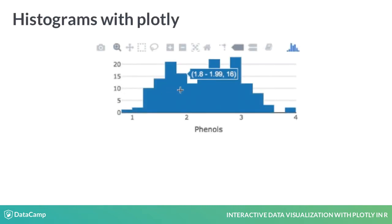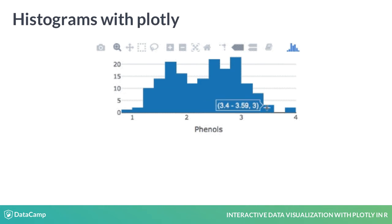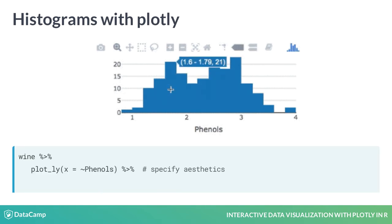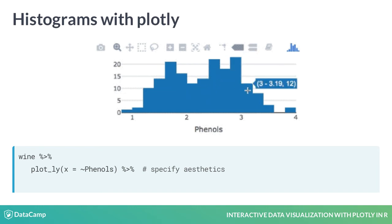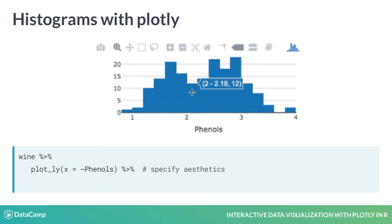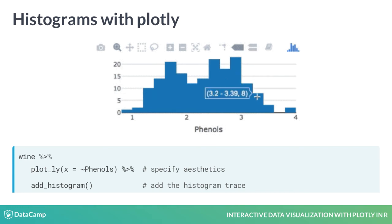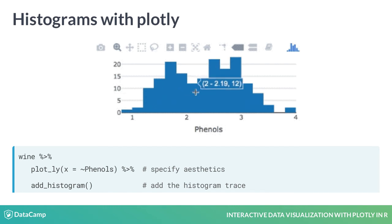To explore the distribution of phenols, a numeric variable, we use a histogram displaying the number of wines with phenols falling into equal-width bins. We again need to specify three parts. First, we pipe the wine dataset into the plot_ly command. Next, we specify x equals tilde phenols, indicating that phenols should be plotted on the x-axis. Finally, we add the histogram trace using the add_histogram command. Notice that we do not need to specify a variable for the y-axis, since Plotly calculates the frequency for each bin in the background.